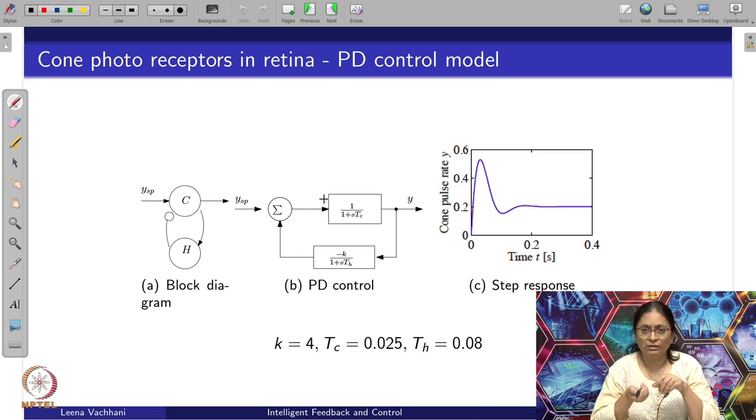It turns out the response is overshooting but gives faster response compared to reaching a particular step input value. For particular K, Tc, and Th, this is the typical response of the retina or cone photoreceptors in retina.